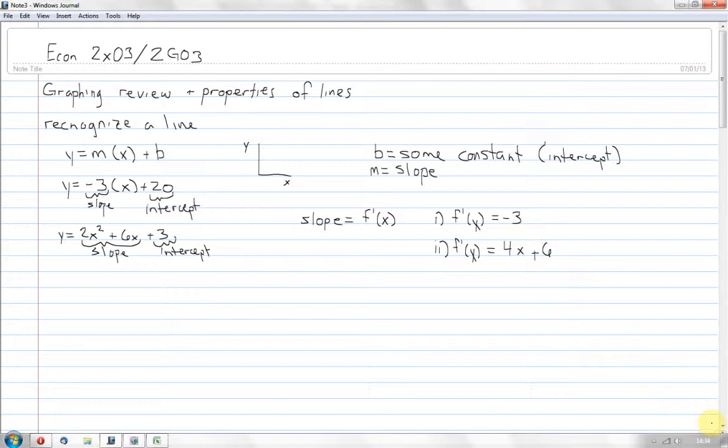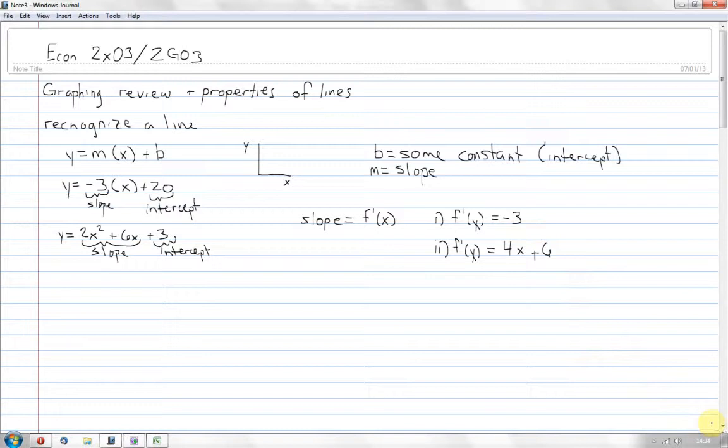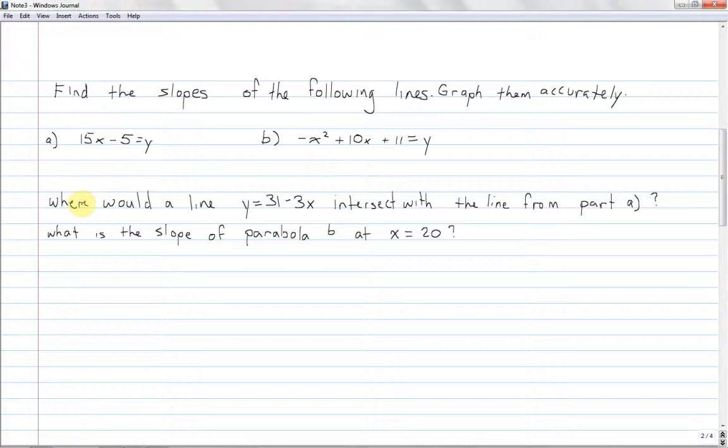So with that in tow, I would like you to approach graphing these lines that I'm about to click on, so find the slopes of the following lines, and then I'd like you to try to graph them as accurately as possible. There's a follow-up question to each one, where would a line y equals 31 minus 3x intersect with the line from part a, that is 15x minus 5, and the second one is, what is the slope of parabola b at x equals 20? So I will get you to pause the video, and I will be back in five seconds with the answers.